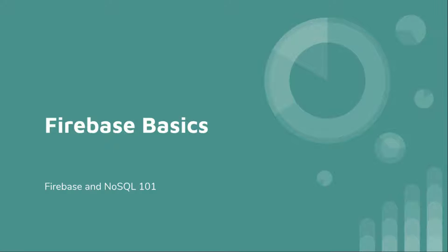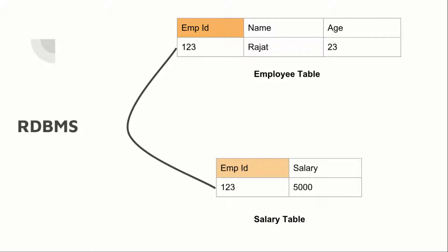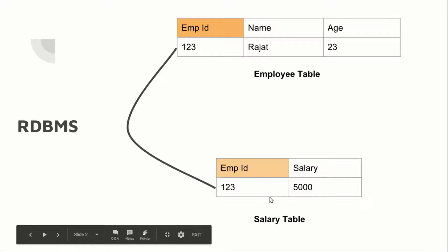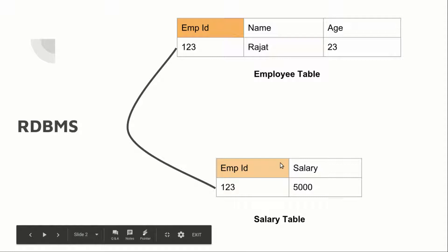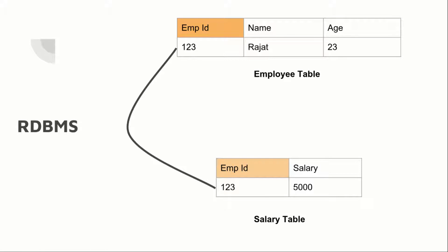Let's talk about NoSQL first. If you have some working knowledge about relational database management systems — also known as RDBMS — in those systems we create tables and store data in them. For example, if we are maintaining a database of employees, we create an employee table with basic employee data, then another table containing salary data, and we can create several tables containing several types of data for employees.